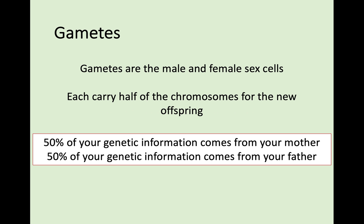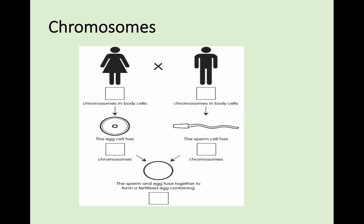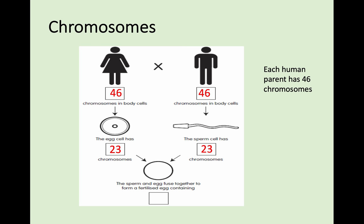These male and female sex cells have the job of carrying half of the chromosomes for the new offspring. 50% of your genetic information comes from your mother and 50% from your father, and this is through the gametes. In humans, there are 46 chromosomes in normal body cells. However, in their sex cells — their gametes — there are only 23.